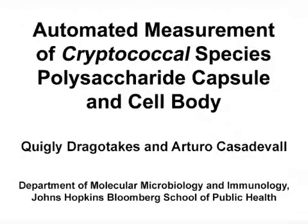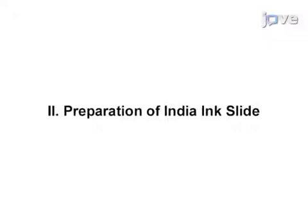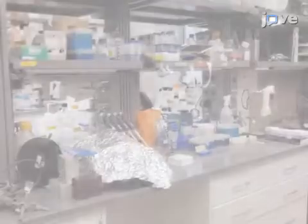The overall goal of this technique is to automate tedious manual measurements. This method can help answer key questions in the cryptococcal field, such as the relationship between capsule or cell body size and different aspects of virulence. The main advantage is that it allows analysis of enormous sample volumes without fatigue. The implications extend toward therapy of cryptococcosis, because capsule and cell body size are important aspects of the pathogen.